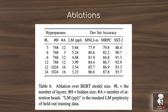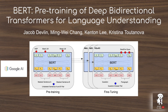BERT reformulates the language modeling pre-training task to instead incorporate bidirectional context and predict masked intermediate tokens in the sequence. This video will explore the details of how this is implemented — the exact masking strategy, how inputs are formatted for BERT, the intermediate representations, the transformer architecture, the output, and how BERT is fine-tuned with transfer learning on sentence-level and token-level tasks like question answering.